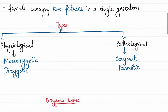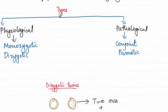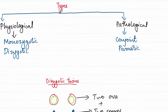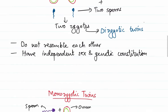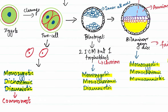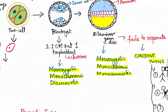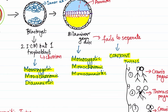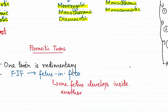In summary: there are monozygotic, dizygotic, conjoined, and parasitic twins. When two ova are shed and penetrated by two sperms, we have dizygotic twins with independent sex and genetic constitution. Monozygotic twins arise from a single zygote — separating at the two-cell stage gives monozygotic dichorionic diamniotic twins; at the blastocyst stage gives monozygotic monochorionic diamniotic twins; at the bilaminar germ disc gives monozygotic monochorionic monoamniotic twins. Failure of the bilaminar disc to separate leads to conjoined twinning. Parasitic twins involve one rudimentary twin.